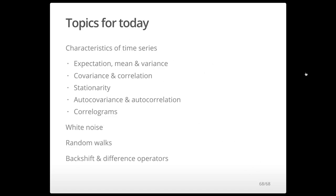By way of review, today we talked about statistical properties of time series including mean and variance, covariance and correlation, and autocovariance and autocorrelation. We discussed simple time series models — white noise and random walks — and introduced the backshift and difference operators. Thank you for your time. Goodbye.